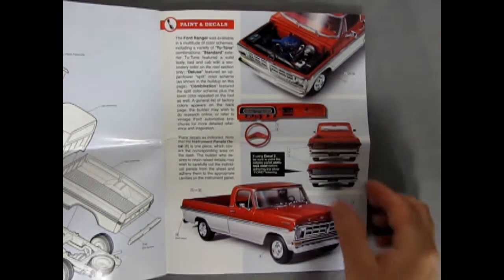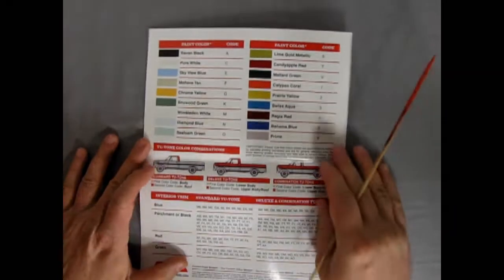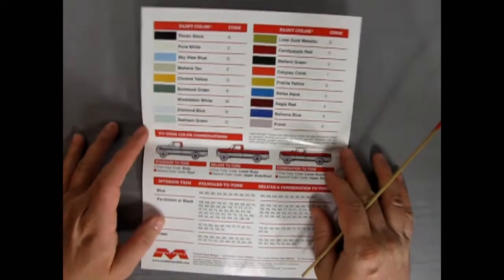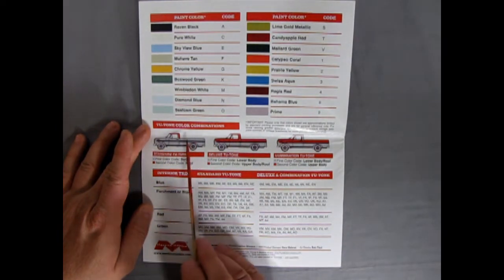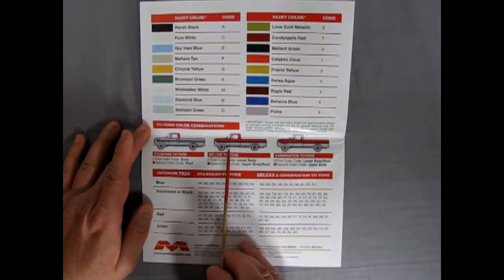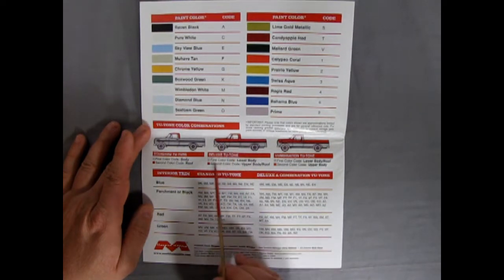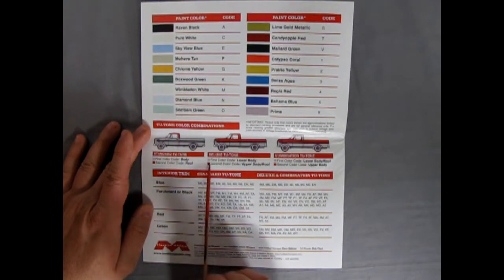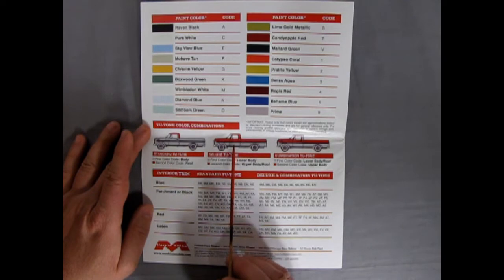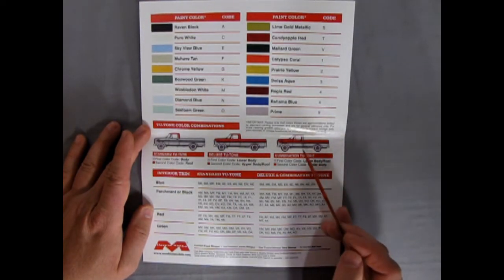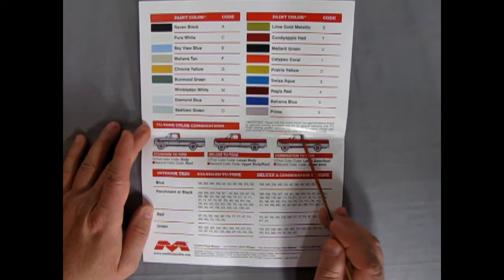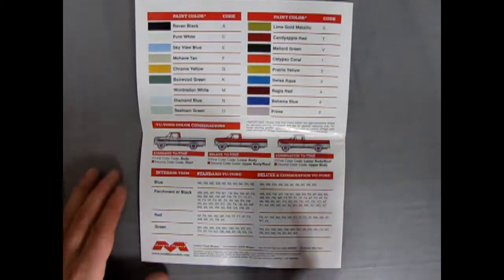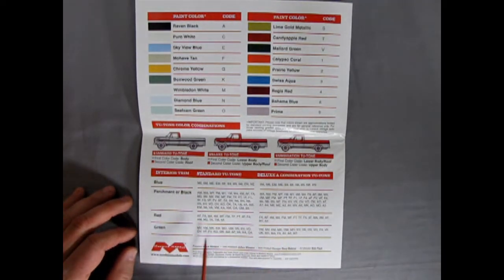Very groovy. And if we flip this over to the back here, we can also see all our paint colors and codes, as well as the special Ford two-tone combinations. We have a first color on our body and then the second color for our roof. Here we have the second color going on the top of the car and the first color down below. So this is a standard two-tone where the roof is a different color. The deluxe two-tone is the roof all the way down to the trim is a different color.